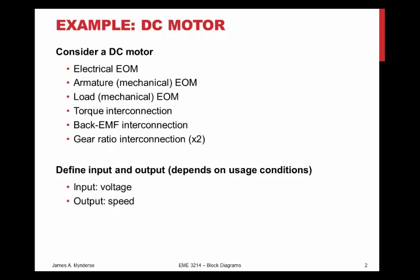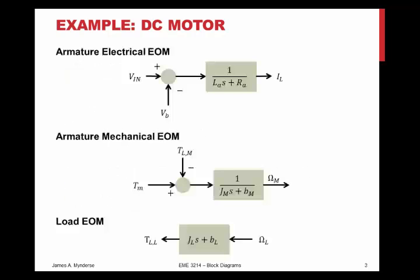You could do it with an output of position instead. You could do it with an output of acceleration. You could do it with an input of current. But for my case, I want an input of voltage and an output of speed because I'm going to do speed control. So assuming that you know how to write the equations, which you will, then these are the different blocks you're going to get.